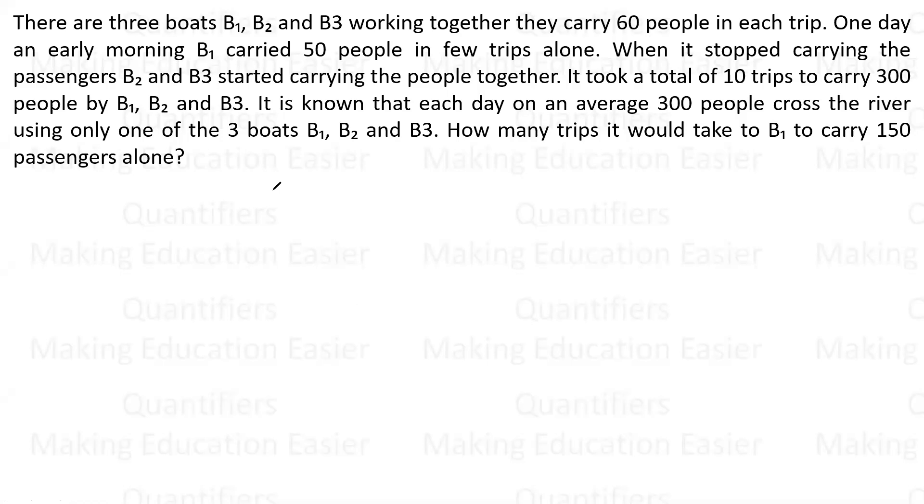And it took a total of 10 trips to carry 300 people by B1, B2, and B3. If it is known that each day on average 300 people cross the river using only one of the 3 boats B1, B2, and B3, how many trips would it take B1 to carry 150 passengers alone?